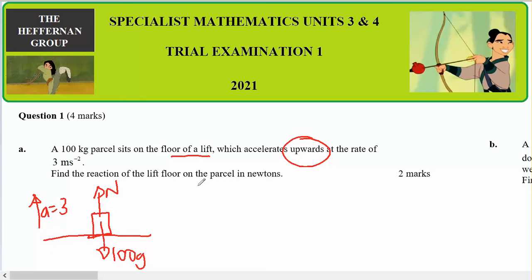Find the reaction of the lift floor on the particle, so find N. The resultant force in the direction of motion will be all forces in the direction of motion, which is N minus anything opposite, which is 100 G. And mass times acceleration will equal that.